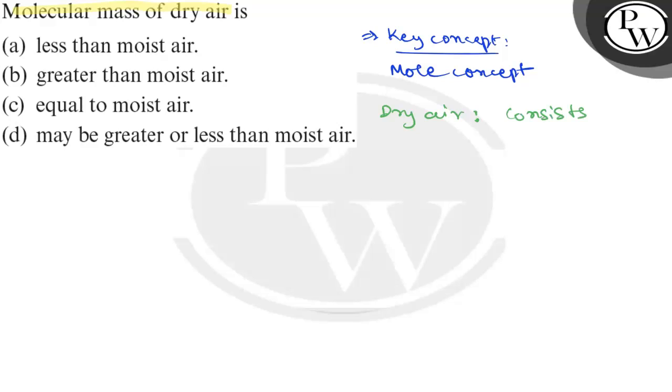While when we talk about moist air, in this case it is going to have water vapor, which is less mass than that of oxygen and nitrogen.